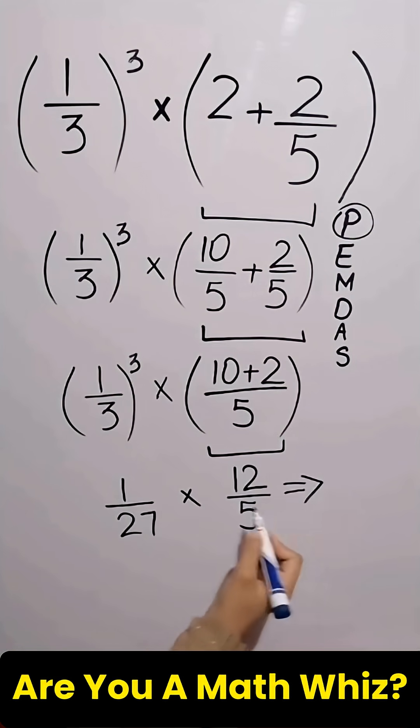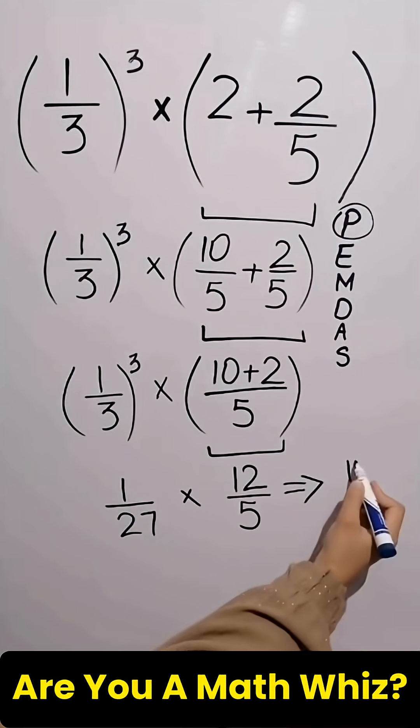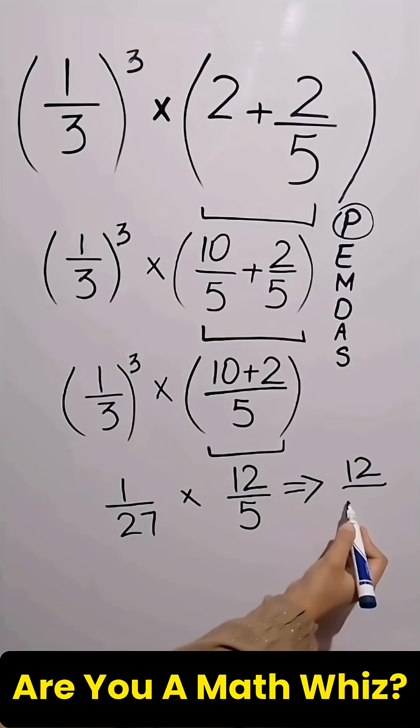Now multiply both the numerators. 1 times 12 equals to 12. Finally multiply both the denominators.